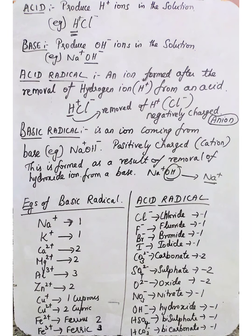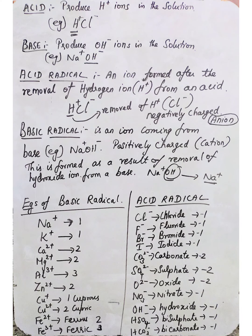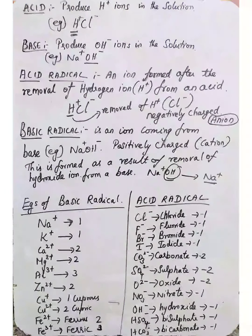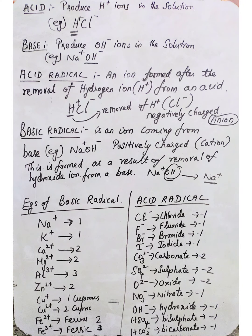What is meant by Acid? An acid produces H⁺ ions in solution — for example, hydrochloric acid. What is meant by Base? A base produces OH⁻ ions in solution — for example, sodium hydroxide (NaOH) gives Na⁺ and OH⁻.